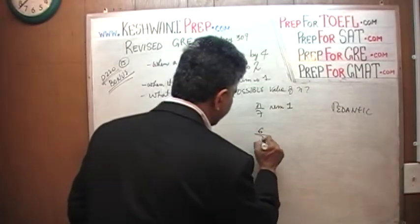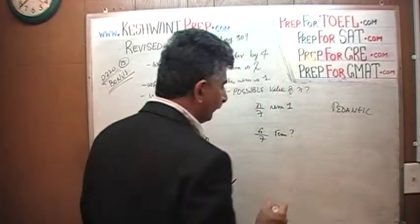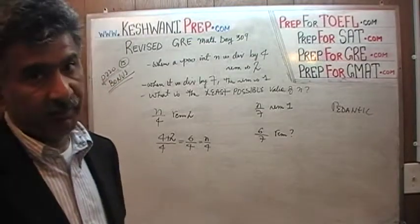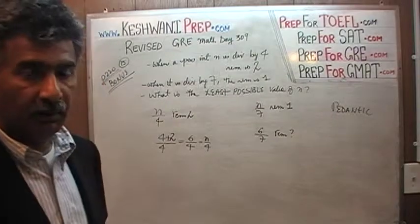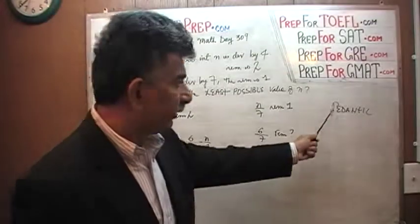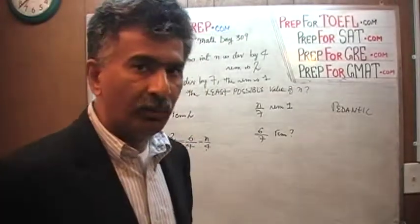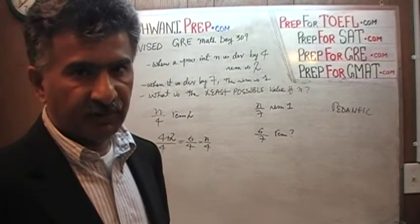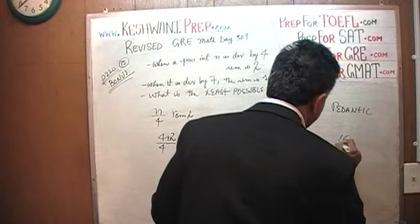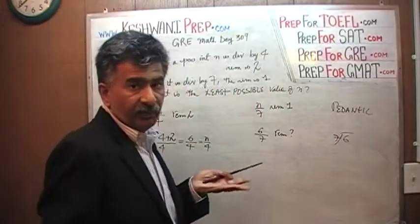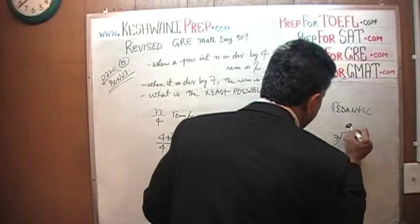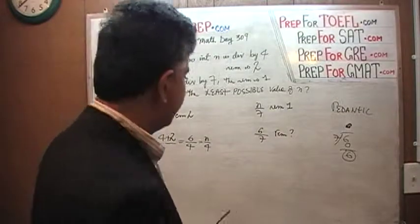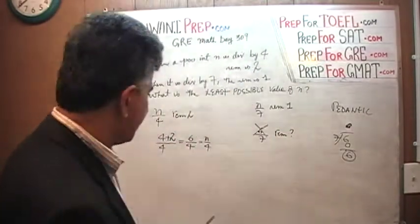Let's put N = 6 in. When N equals 6, what is the remainder when divided by 7? We can't even talk about remainder because there is not enough to be divided. But technically speaking, 6 divided by 7 has a remainder of 6, if you want to be very pedantic — pedantic means somebody who is being overly scholarly. 6 divided by 7 has a remainder of 6 because 6 has no 7s in it. So the remainder is 6. It does not have a remainder of 1, so that does not do the job. 6 will not do the job.